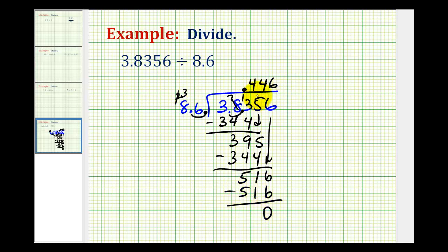So this is our quotient. So 3.8356 divided by 8.6 is equal to 0.446. Notice I put a 0 in the ones place value. You'll almost always see a decimal written that way.